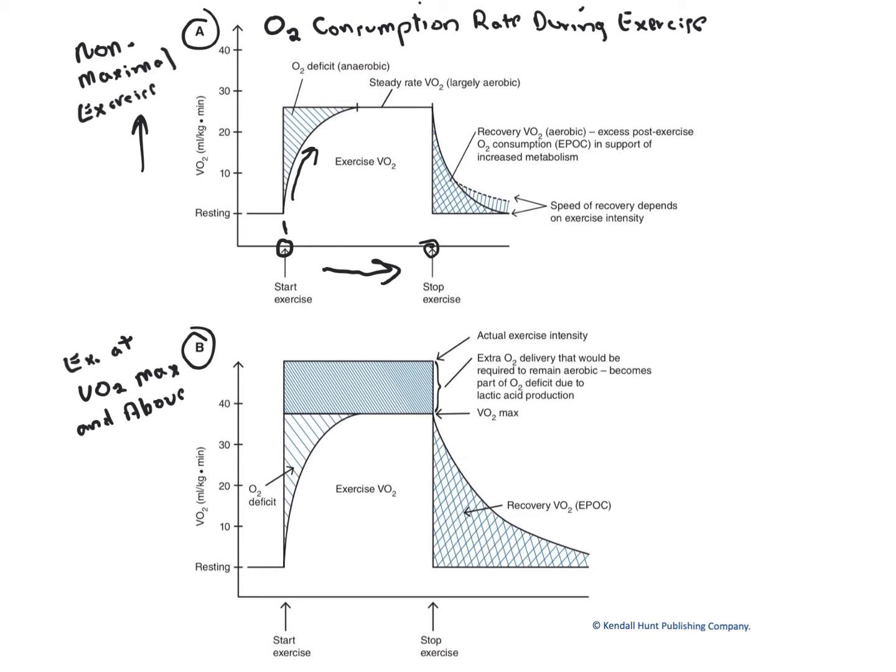From the instant the activity begins, VO2 starts to climb, ultimately leveling off at what we call steady rate VO2. Some people say a steady state condition has been achieved. More about that in a moment.